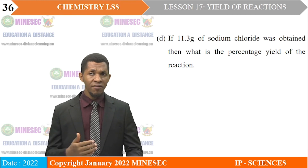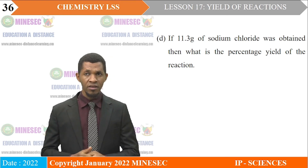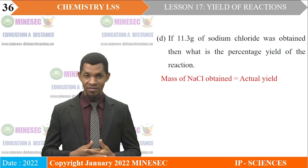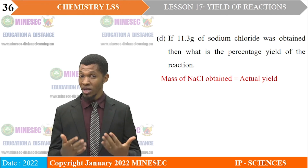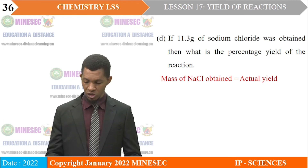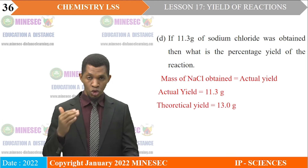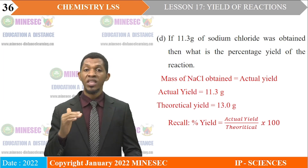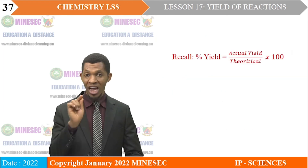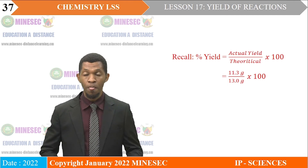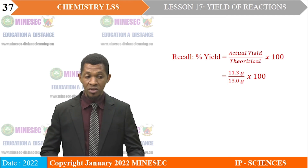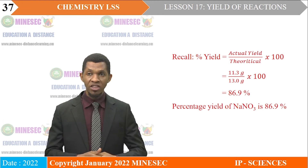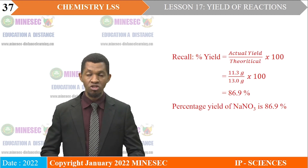Part D — if 11.3 grams of sodium chloride was obtained, what is the percentage yield? The actual yield is 11.3 g and the theoretical yield is 13.0 g. Percentage yield = (11.3/13.0) × 100 = 86.9%. The percentage yield of sodium chloride is 86.9%.